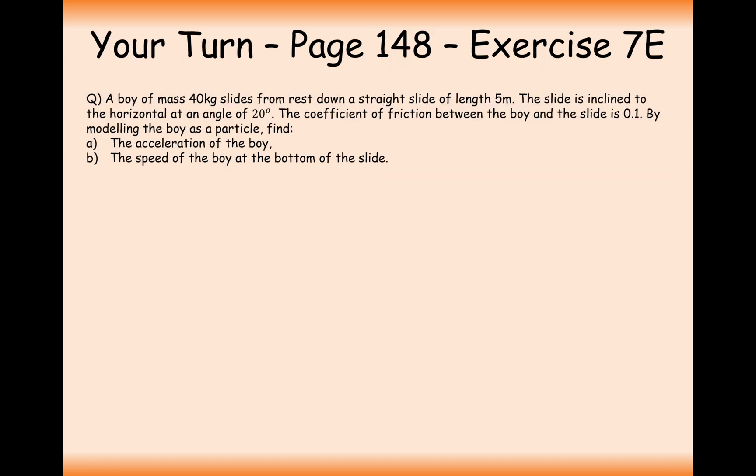Right, okay then, your turn to have a go at this question here then. Pause the video and try this question out. Right, okay then, so a boy of 40 kg slides down from rest in a straight line of length 5 meters. So we've got an inclined slope here, 20 degrees to the horizontal. We've got the boy who is at the top of the slide with mass 40 kg, so 40g as the force there. Let's just quickly resolve these, because that's a quick job. 40g cos 20, and 40g sin 20.